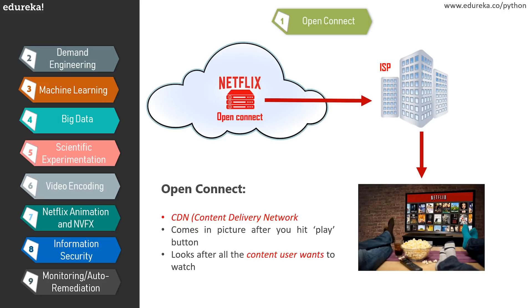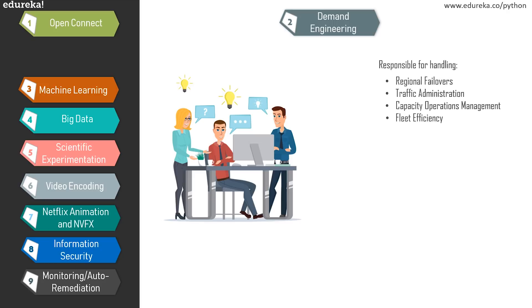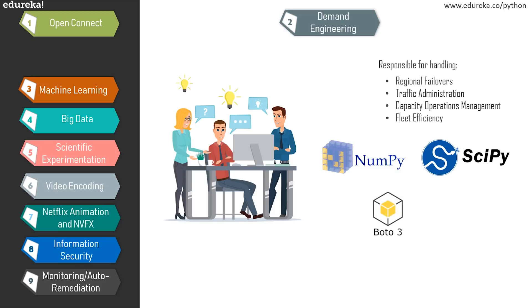The demand engineering team is responsible for handling Netflix cloud's regional failovers, traffic administration, capacity operations management — looking after the limit up to which content can be made serviceable — and fleet efficiency. The libraries used by this team are NumPy and SciPy for numerical analysis, Boto3 which is the AWS SDK for Python helping developers integrate Python into AWS infrastructure, and RQ (Redis Queue) which is a Python library that tracks tasks in queue and allows execution of asynchronous workloads.